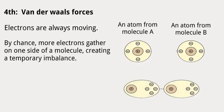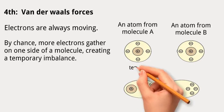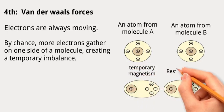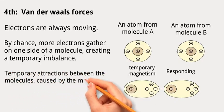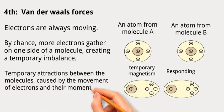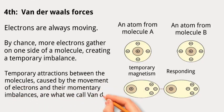The neighboring molecule notices this tiny magnetic moment and adjusts its electrons a bit. So, now you have one molecule with a temporary magnetism and the other responding to it. These temporary attractions between the molecules caused by the movement of electrons and their momentary imbalances are what we call van der Waals forces.